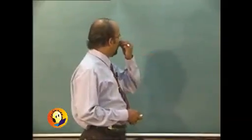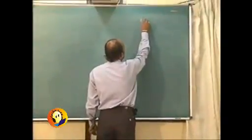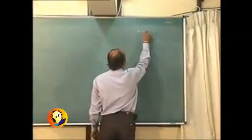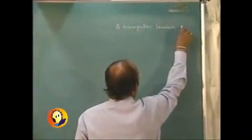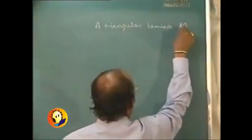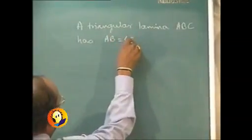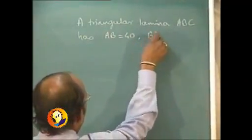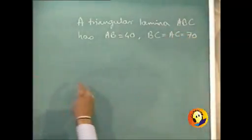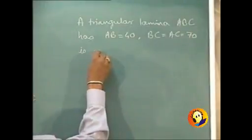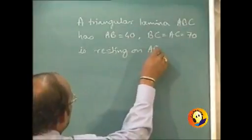Let us consider a simple problem. A triangular lamina ABC has AB equal to 40 millimeters, BC equal to AC equal to 70 millimeters, resting on AB in HP.